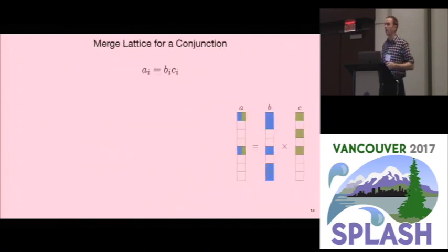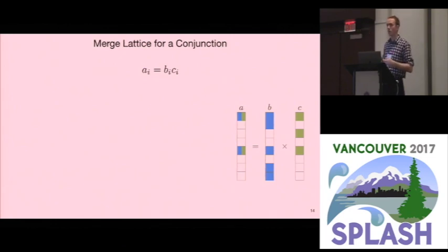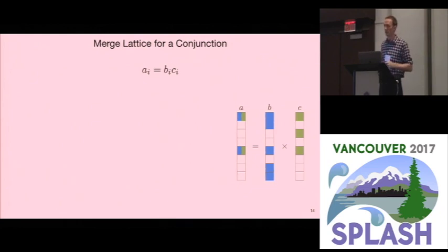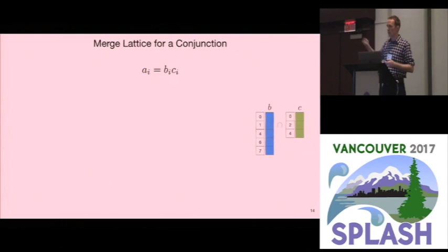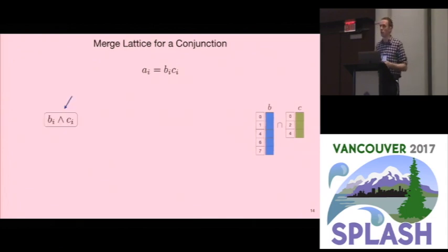The key complexity we have to deal with is this intersection code, and there we introduce merge lattices. I've simplified the expression to an element-wise multiplication of two sparse vectors. Since they're sparse, I squash them together and must store the indices explicitly. We want to iterate over the intersection of this expression, so we formalize this as a merge lattice — an ordered lattice.